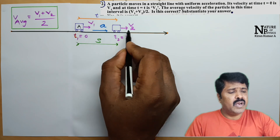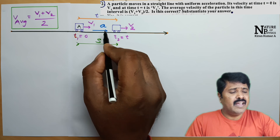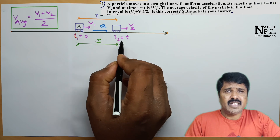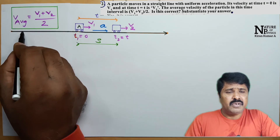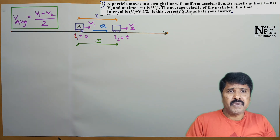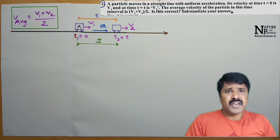So the change in velocity gives acceleration A, and displacement is S. The question asks us to show that V average is equal to V1 plus V2 divided by 2 — that is, the average velocity.